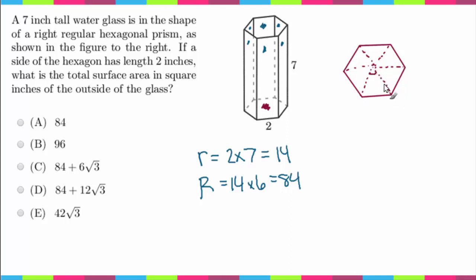So let me redraw this triangle just to enlarge it. Okay, something like that. That's crooked, but that's okay. So we've determined that this angle here is 60 degrees.